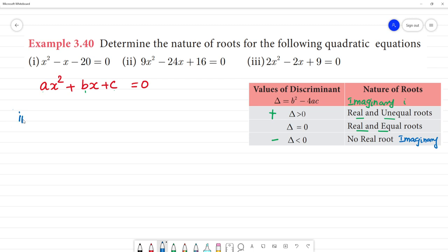Second problem. 9x square minus 24x plus 16 equal to 0. So a equals 9, b equals minus 24, coefficient of x. C equals 16.